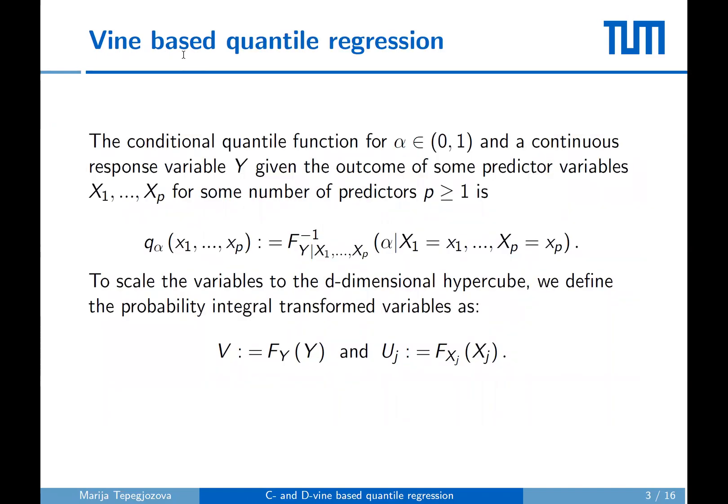To combine copulas in quantile regression we first look at the definition of the conditional quantile function. For a continuous response variable Y and predictors x1 to xp, qα is defined as the inverse of the conditional distribution of Y given x1 to xp for given alpha in the interval (0,1). Since copulas only live on the unit hypercube, we define the scaled values of Y and xj to the unit hypercube using the probability integral transform.